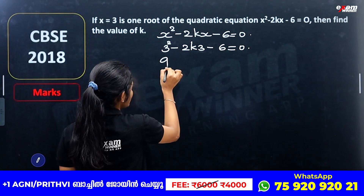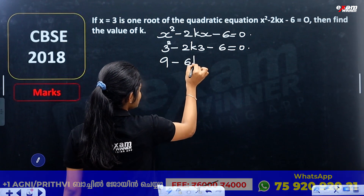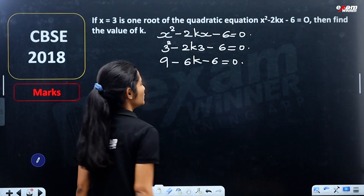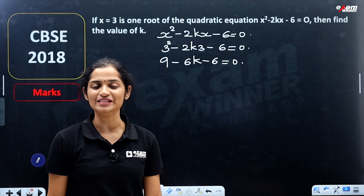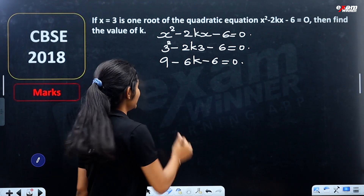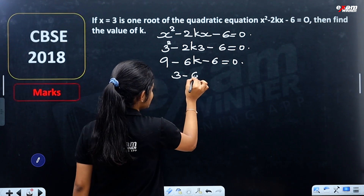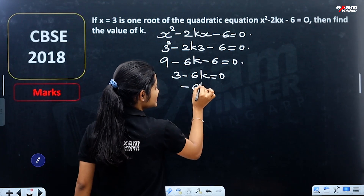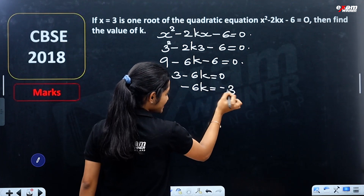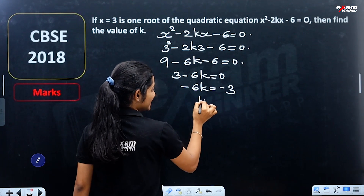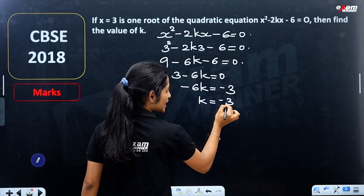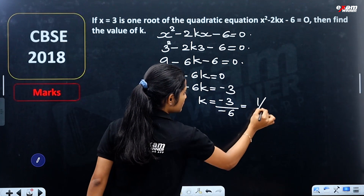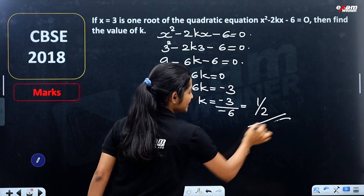Then, 9 - 6k - 6 = 0, which simplifies to 3 - 6k = 0. So k = 3/6, which equals 1/2. The value of k is 1/2.